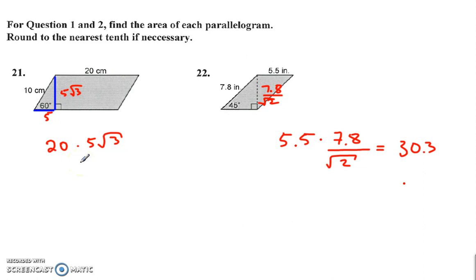And then over here we know that this right here is a 45, 45, 90, so it's the hypotenuse divided by radical 2, so 7.8 over radical 2 times 5.5, base times height, and that gives us approximately 30.3.